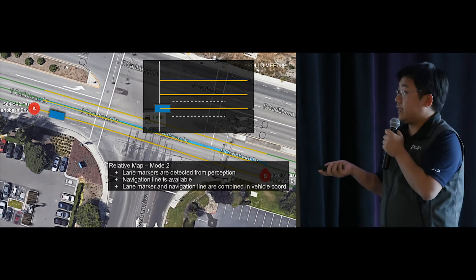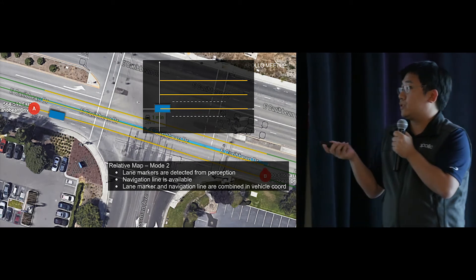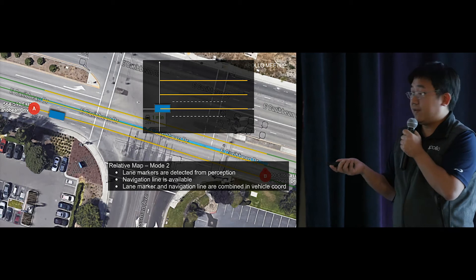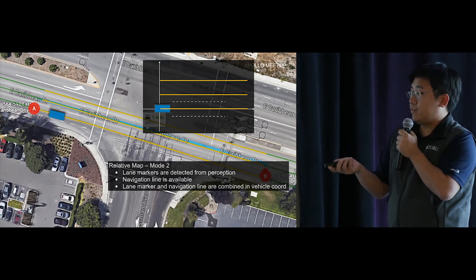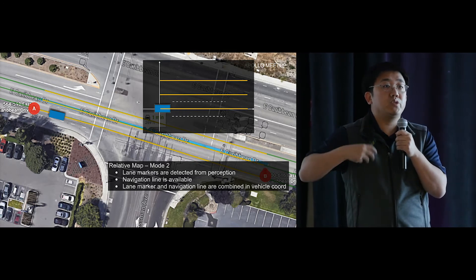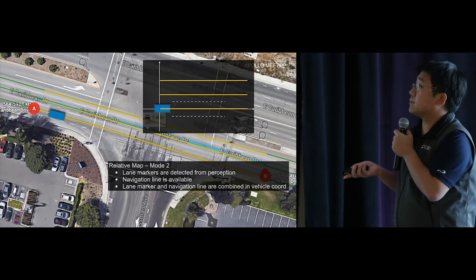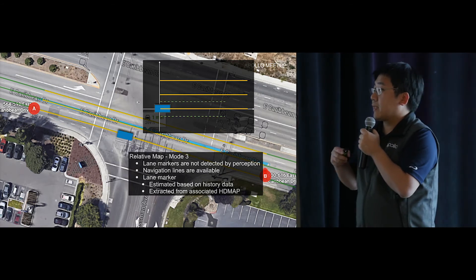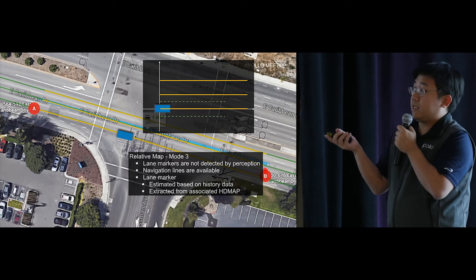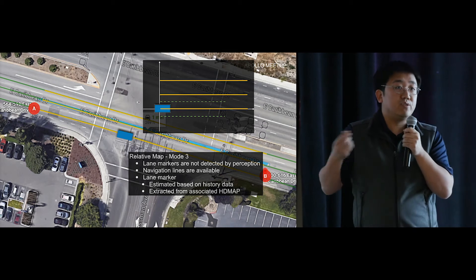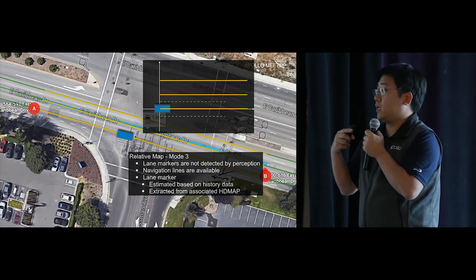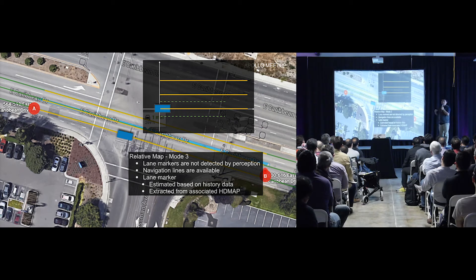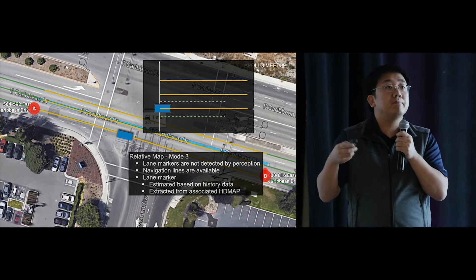Mode 2 is when localization has recovered. In this mode, the relative map receives both lane marker information and the navigation line, and combines them to generate map data passed to the planning module. Mode 3 is when lane markers may not be available — for example, when the vehicle is in the middle of an intersection with no lane markers detectable. In this case, the relative map uses only the navigation line as the main input, and lane boundaries can be estimated from historical data or extracted from the associated HD map.